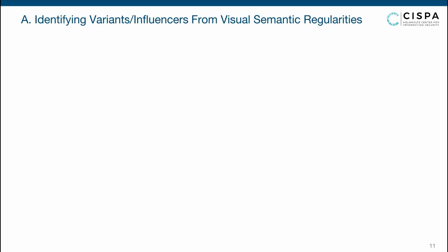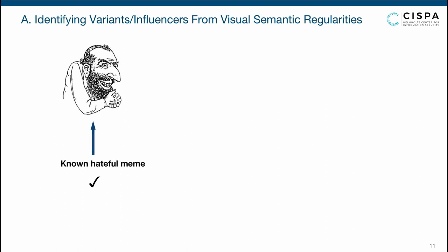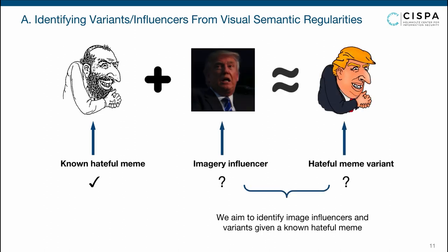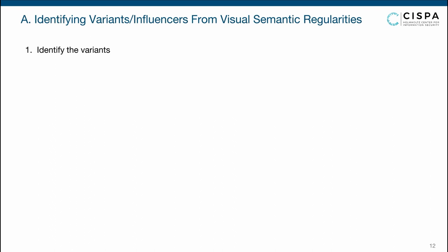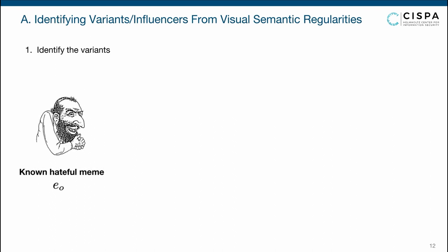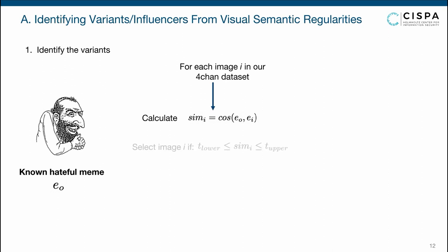We start with visual semantic regularities. Assume we have a known hateful meme such as Happy Merchant — how can we identify hateful meme variants like Trump Merchant, and can we even estimate the imagery influencer, like Donald Trump's picture in this case? To do this, we first take the image embedding of the hateful meme and compute cosine similarities between this embedding and every image embedding in our Fortin dataset. We then identify a threshold range manually, and if the cosine similarity falls in this range, we consider the image a potential variant.